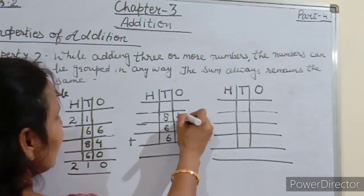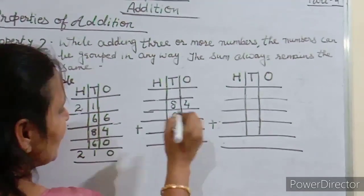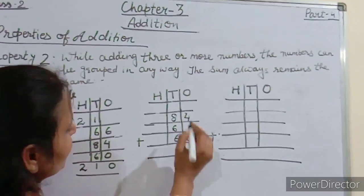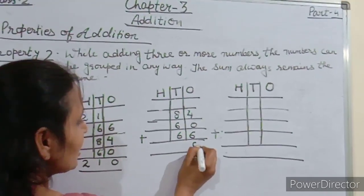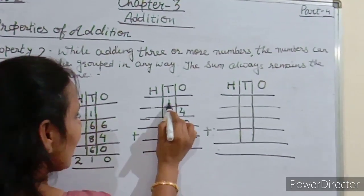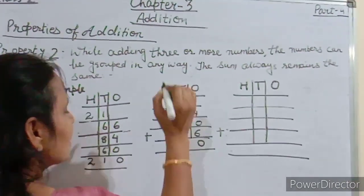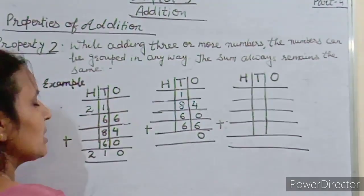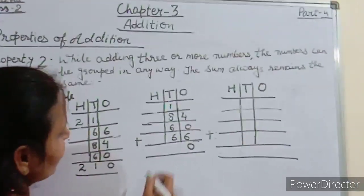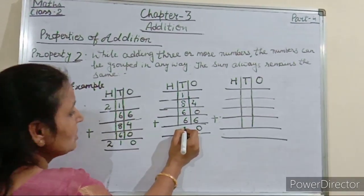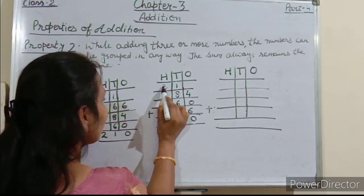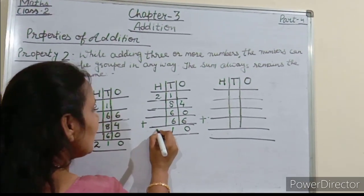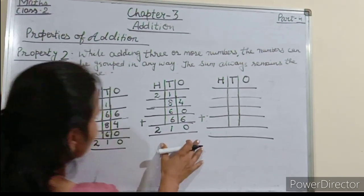I have written 84 plus 60 plus 66. 4 plus 6 equals 10, so write 0 under the ones column and carry 1. At the tens place, 8 plus 6 plus 6 is 14 plus 6 is 20, plus 1 is 21. Write 1 at the tens place and carry 2 to the hundreds column. So again the answer is the same: 210.